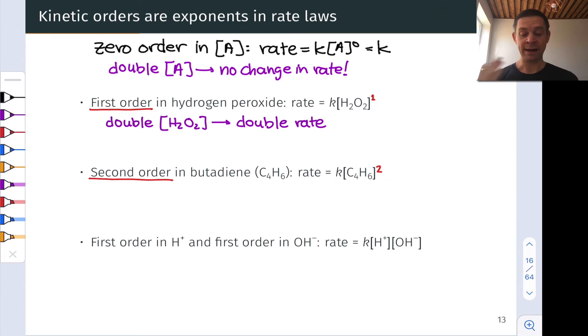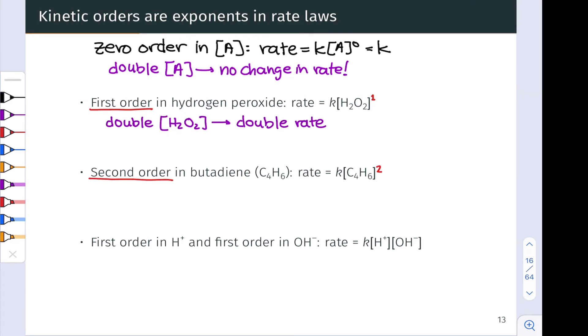In this case, the rate equals k times the concentration of C4H6 to the second power, or squared.